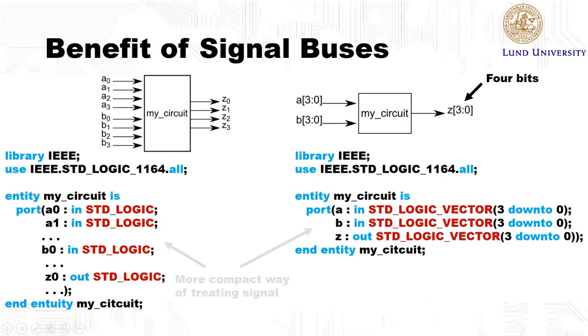So the benefit here is that we get a much more compact notation in VHDL, where we only need 3 rows in the declaration of the entity instead of 12.